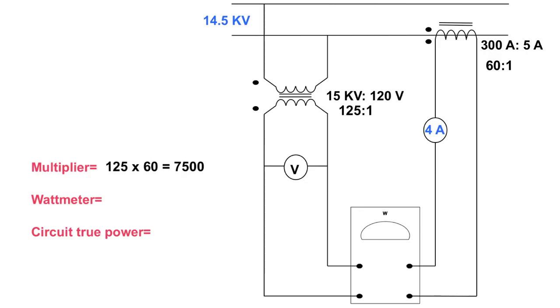Now for our wattmeter reading, what we've got here is I've got a line voltage of 14.5 KV, and over here I've got 4 amps on my secondary side so I don't need to worry about that. But I do need to figure out what my voltage is going to be on this side here. So I can take this voltage and divide it by 125 and get my wattmeter reading.